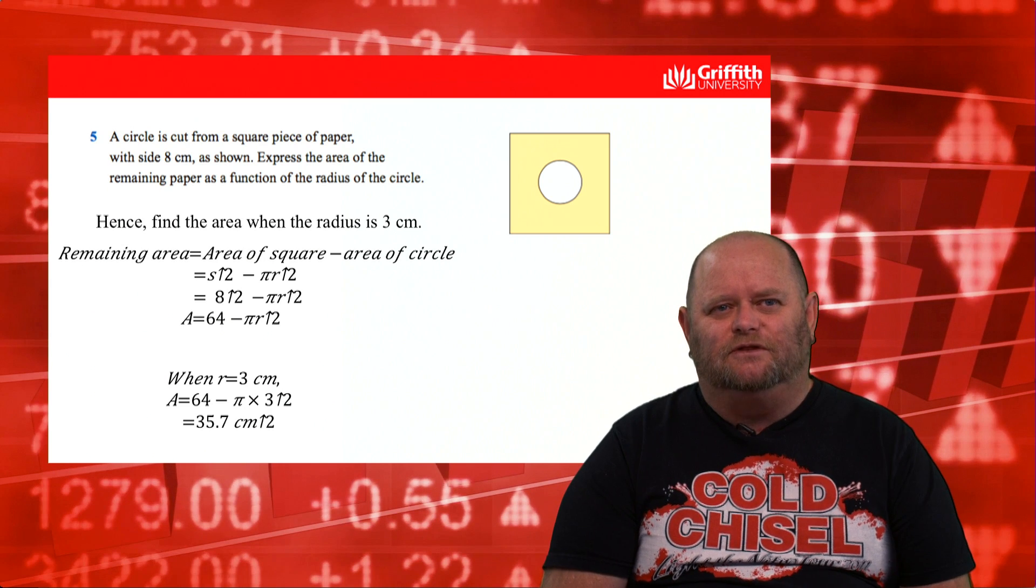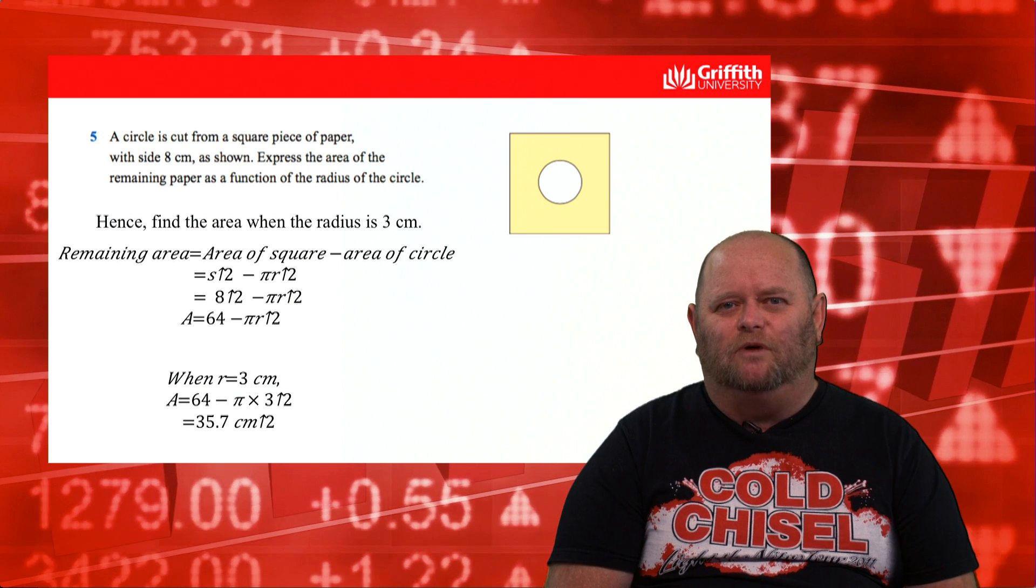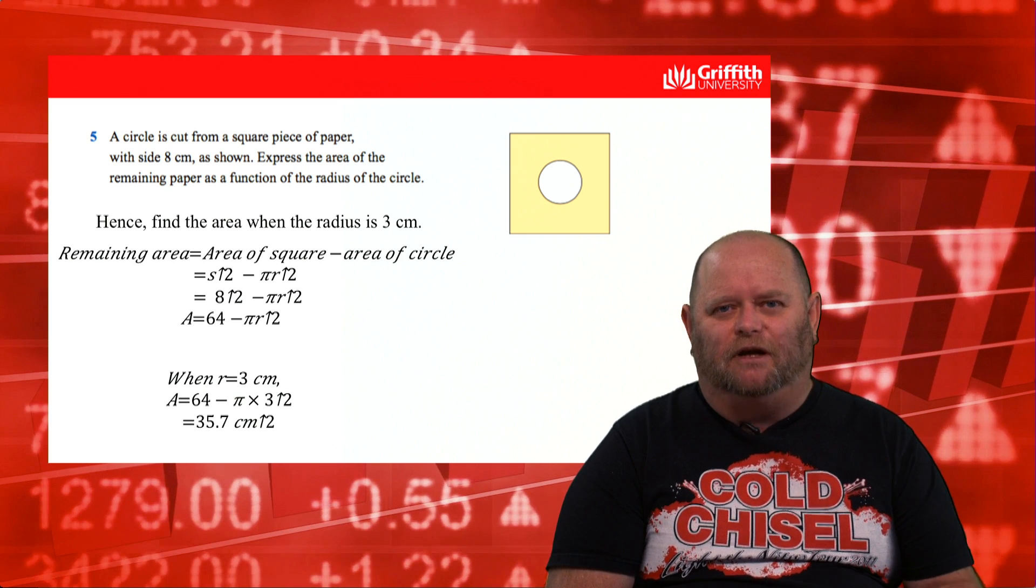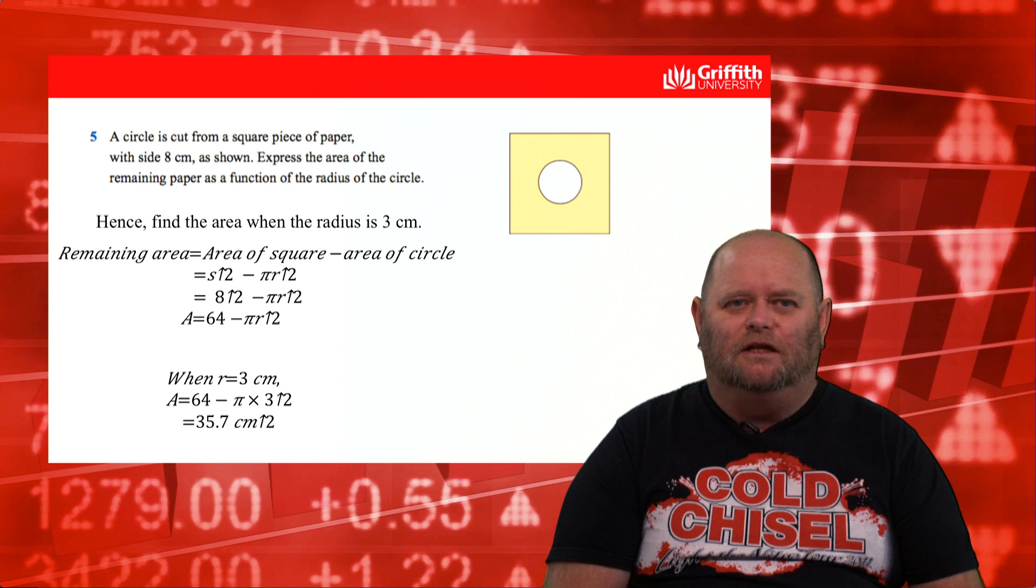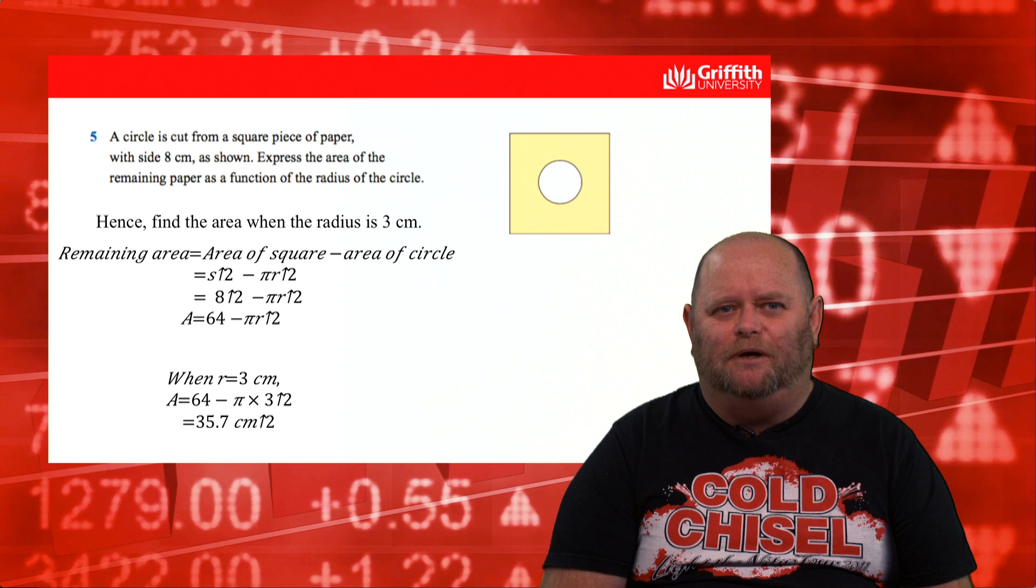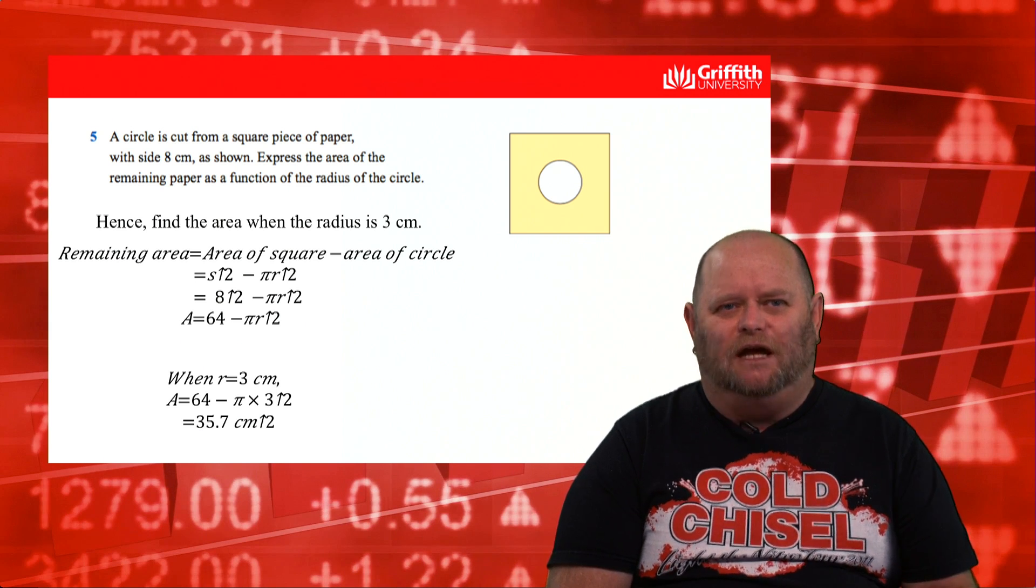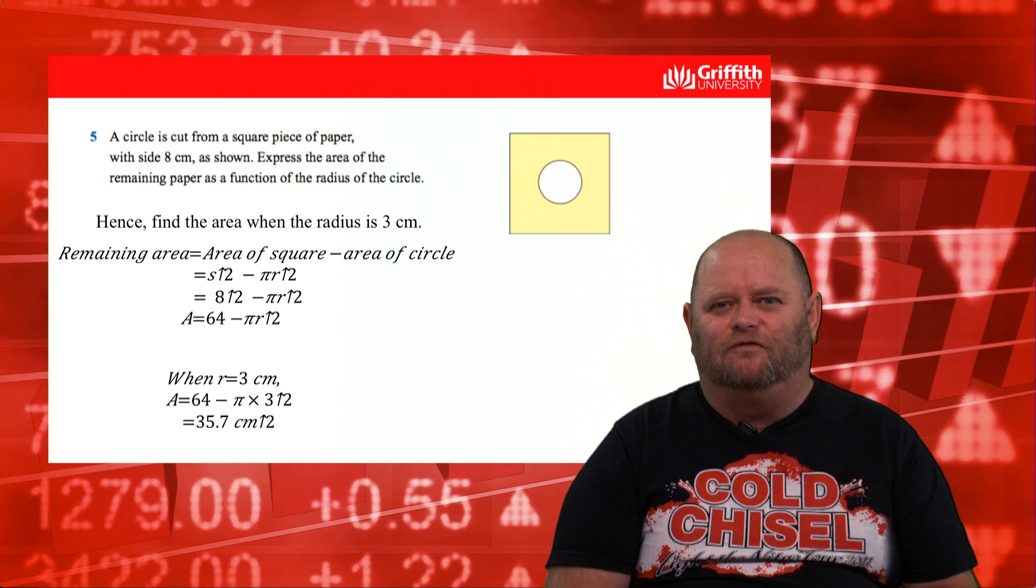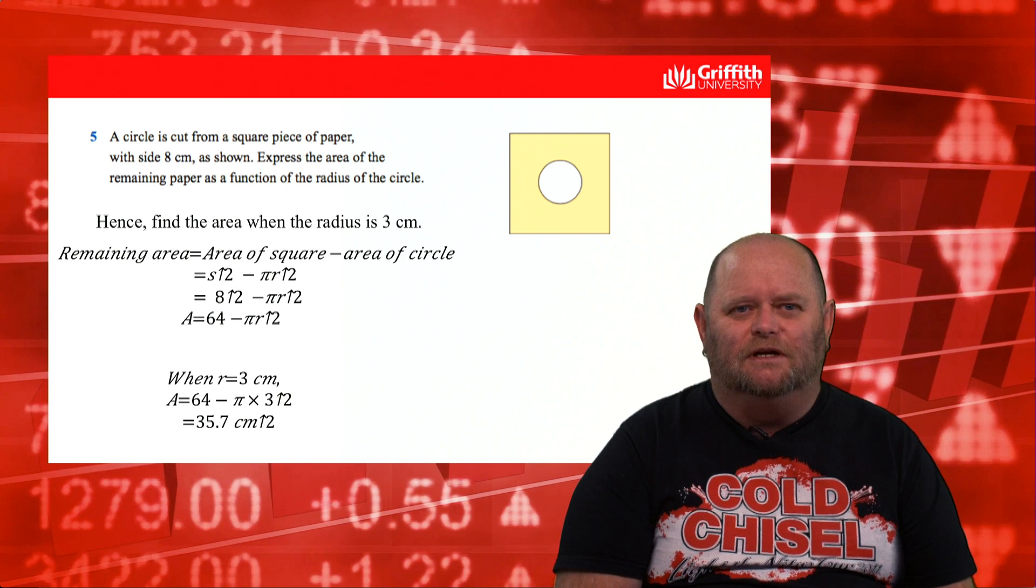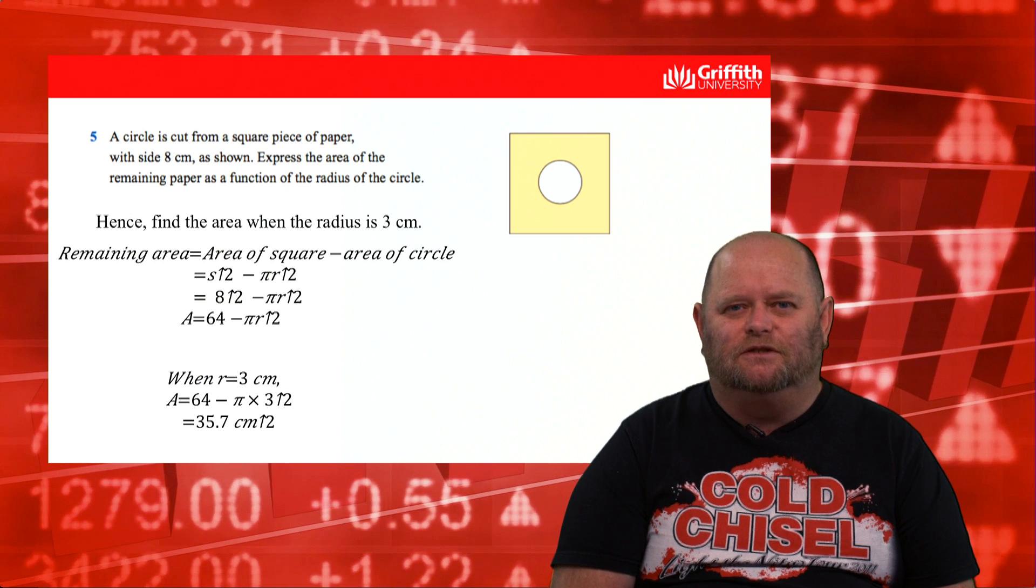Another thing that we're asked to do from time to time is that we develop a mathematical model but then we apply that model to create data. Let's go back to the old problem where a circle was cut from a piece of paper. The question might be, once we've found that particular function, hence find an area for a given value of the radius. We'd have to use that model then to derive an answer.